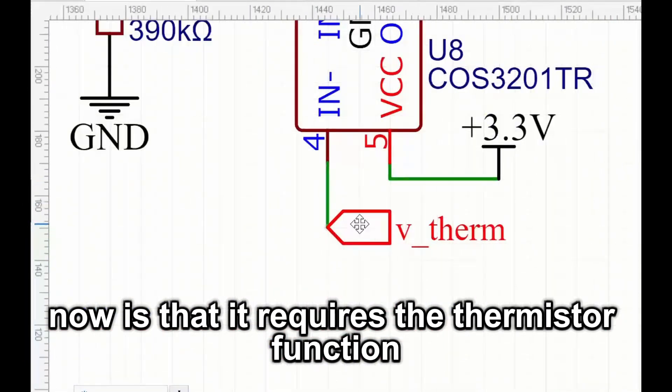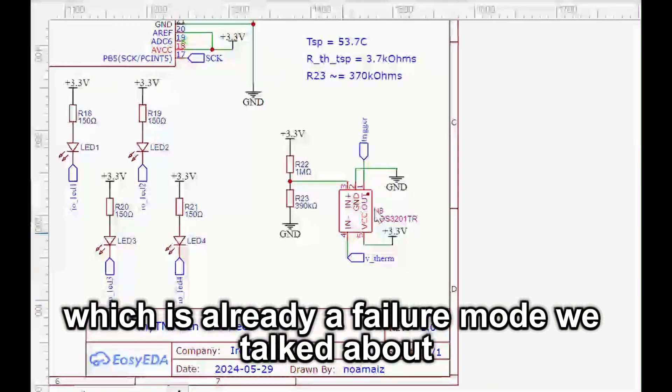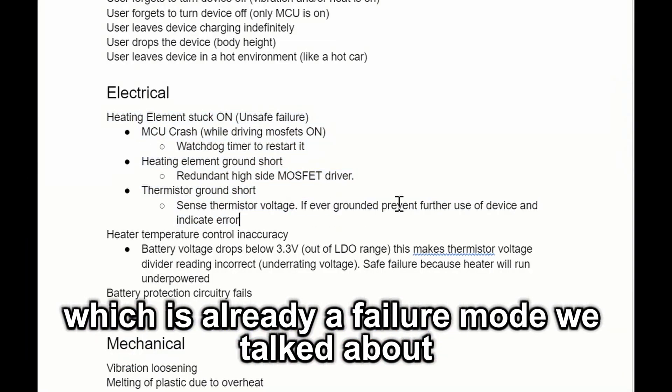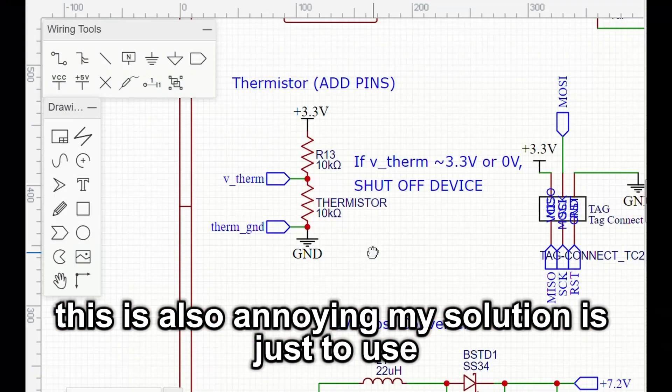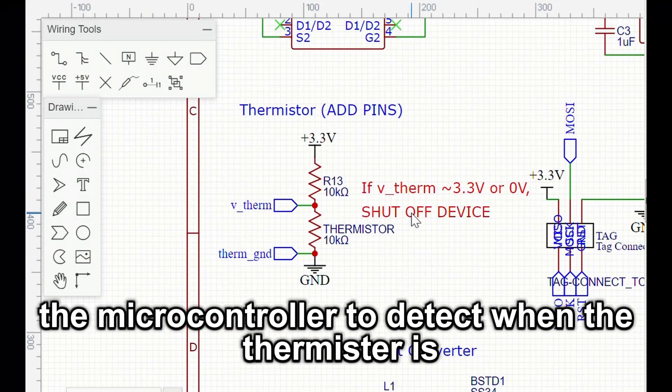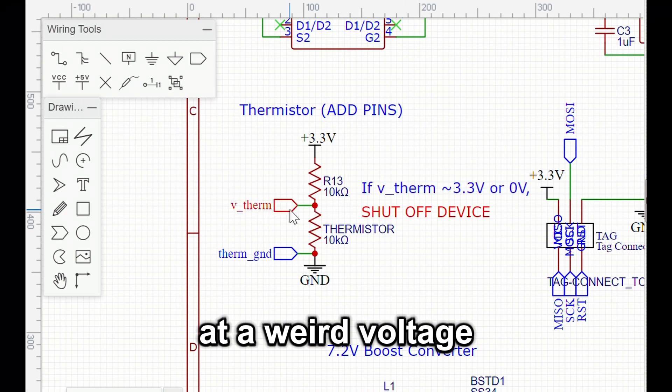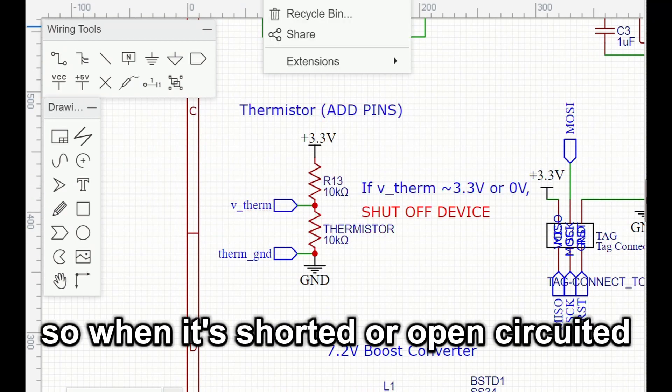The only problem now is that it requires the thermistor to function, which is already a failure mode we talked about. Are you starting to understand why this is all so annoying? My solution is just to use the microcontroller to detect when the thermistor is at a weird voltage, so when it's shorted or open-circuited.